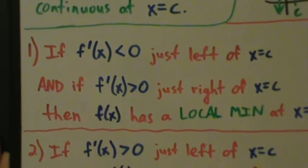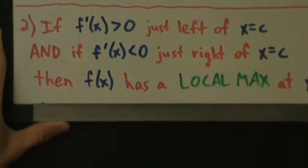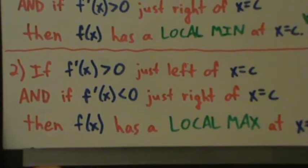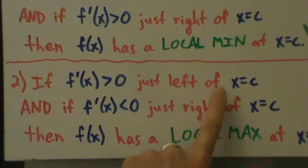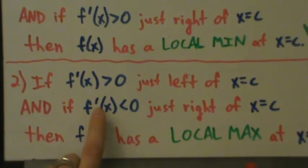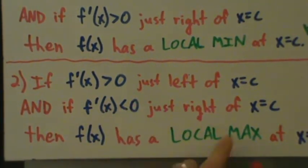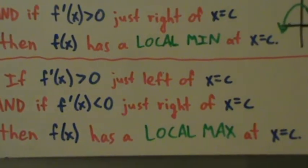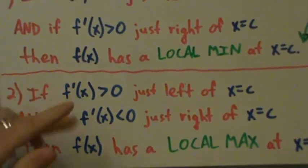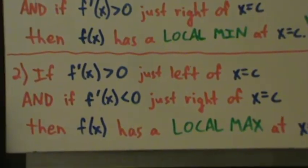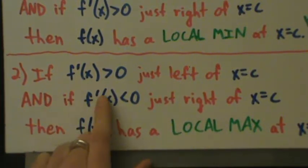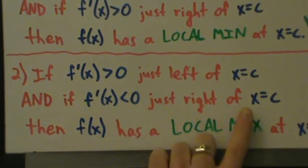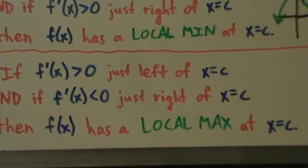Now let's look at part two, which is pretty similar. If f prime of x is positive just left of c, and f prime of x is negative just right of c, then f of x has a local max at x equals c. It's basically just the flip-flop from part one: the function increases just left of c, and decreases just right of c, giving a local max at x equals c.